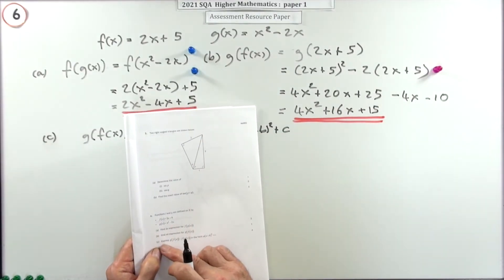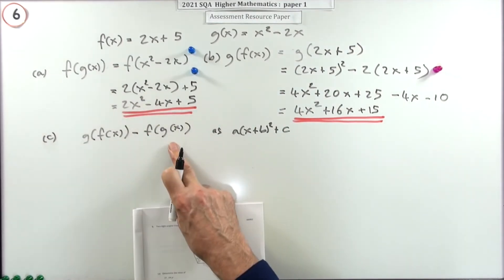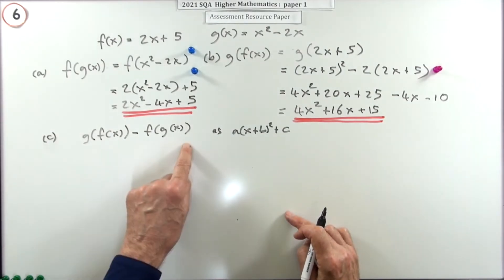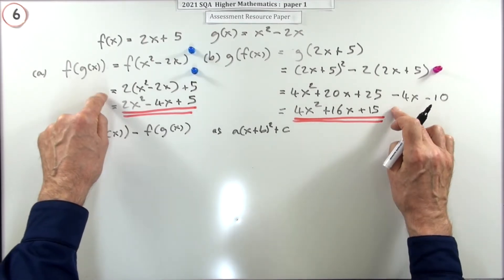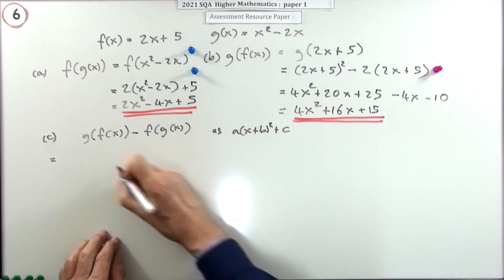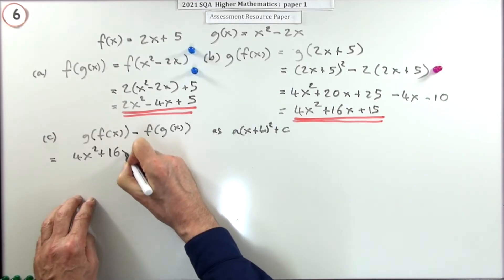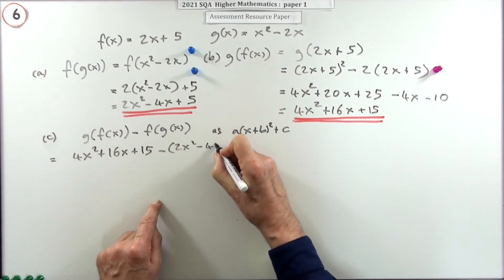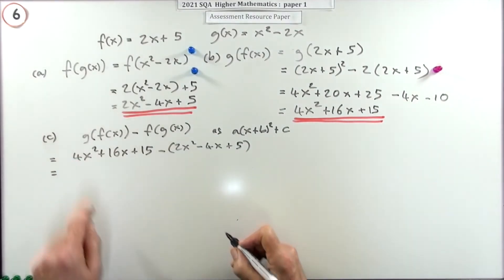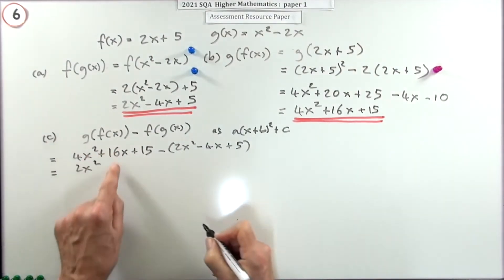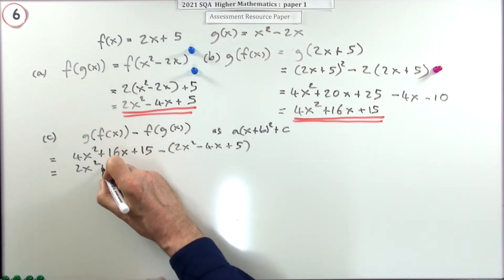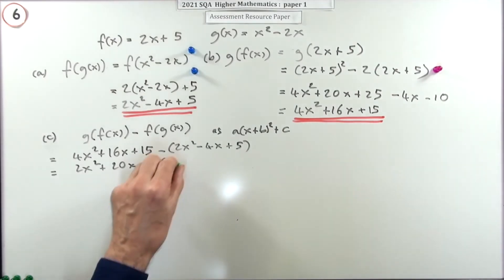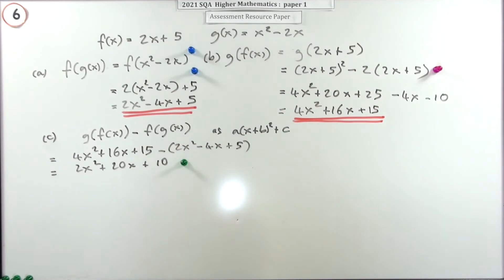Part c says express g of f of x minus f of g of x — which will obviously be a quadratic — and write it in completed square form, for four marks. The first mark is just for obtaining the expression from the working in parts a and b. You've got the big one take away the wee one. Subtract all the terms by putting them in a bracket: 4x² minus 2x² is 2x², 16 plus 4 gives plus 20x, and 15 minus 5 is plus 10.